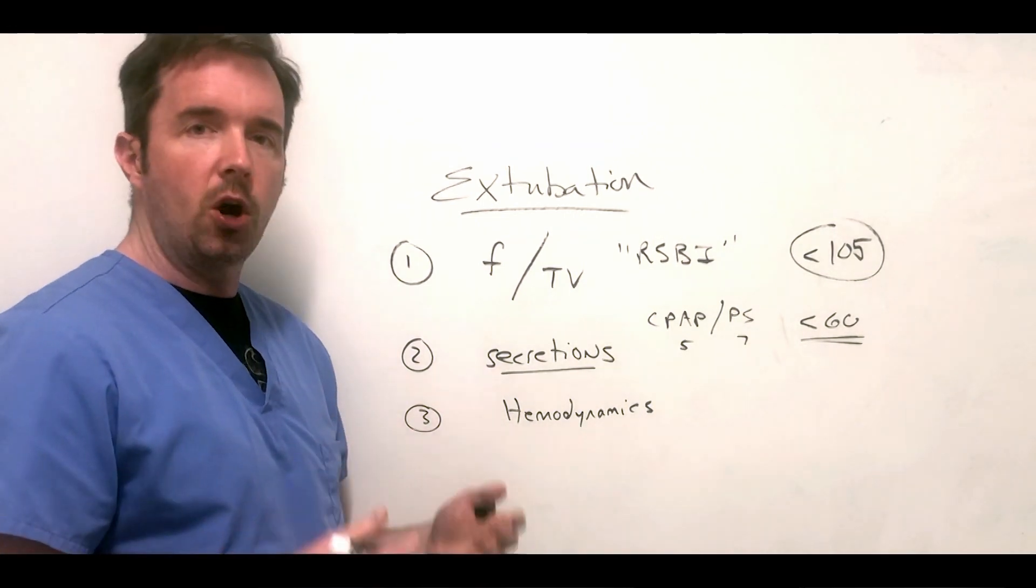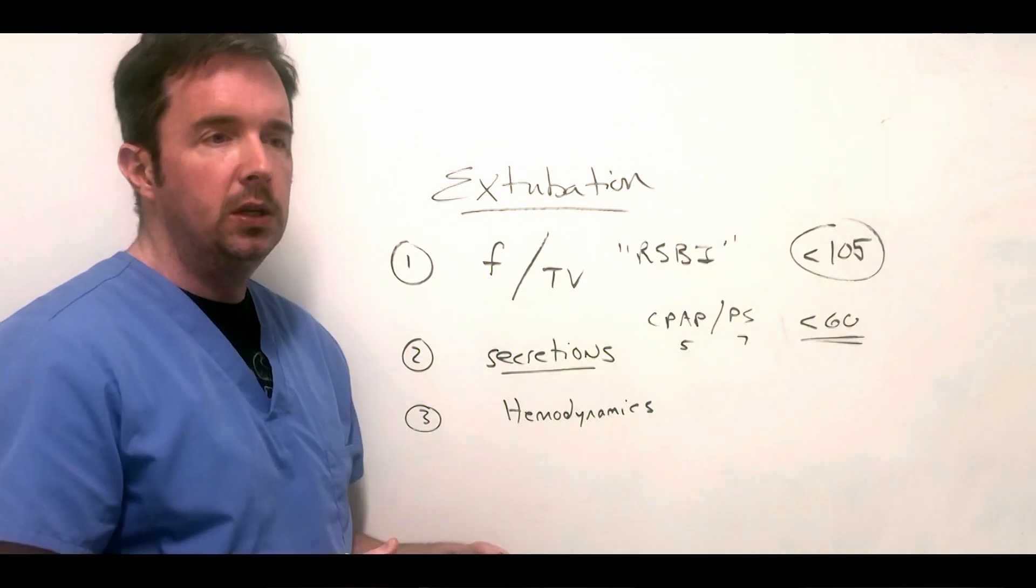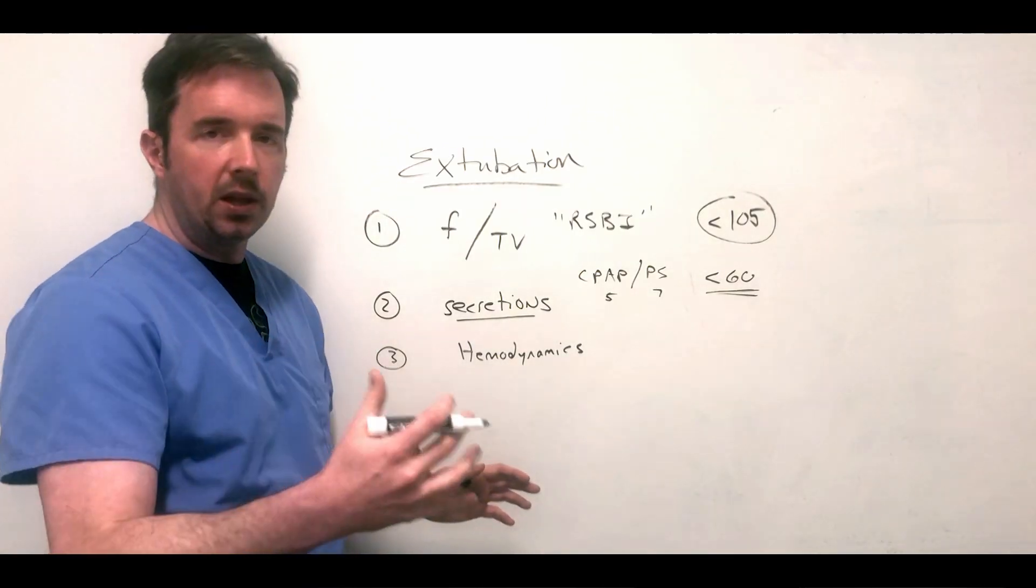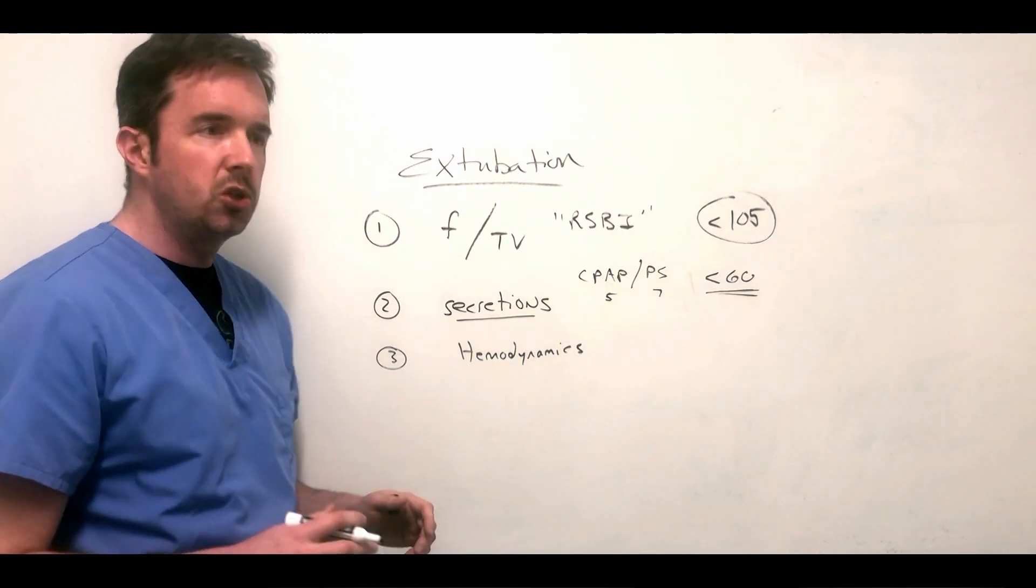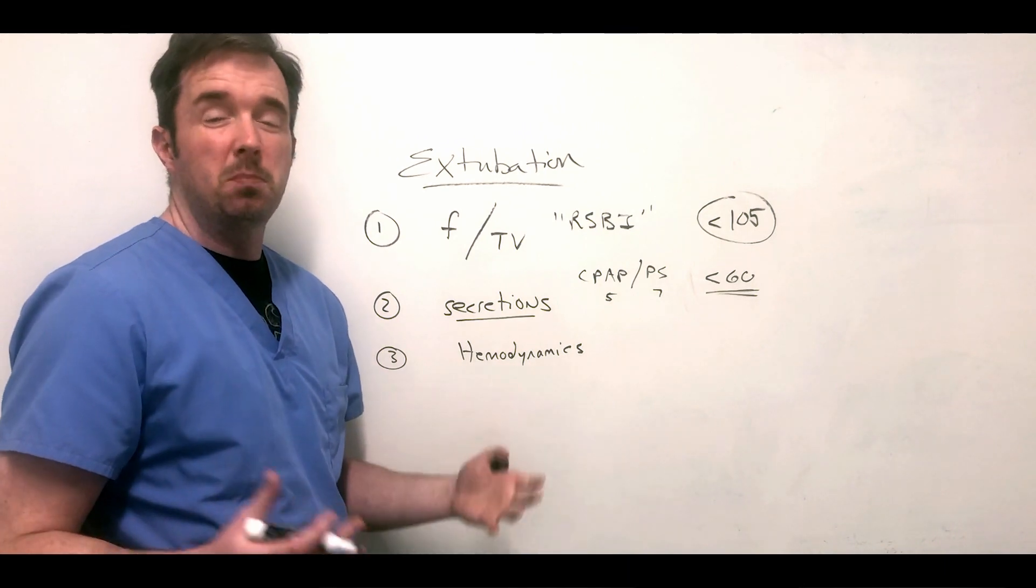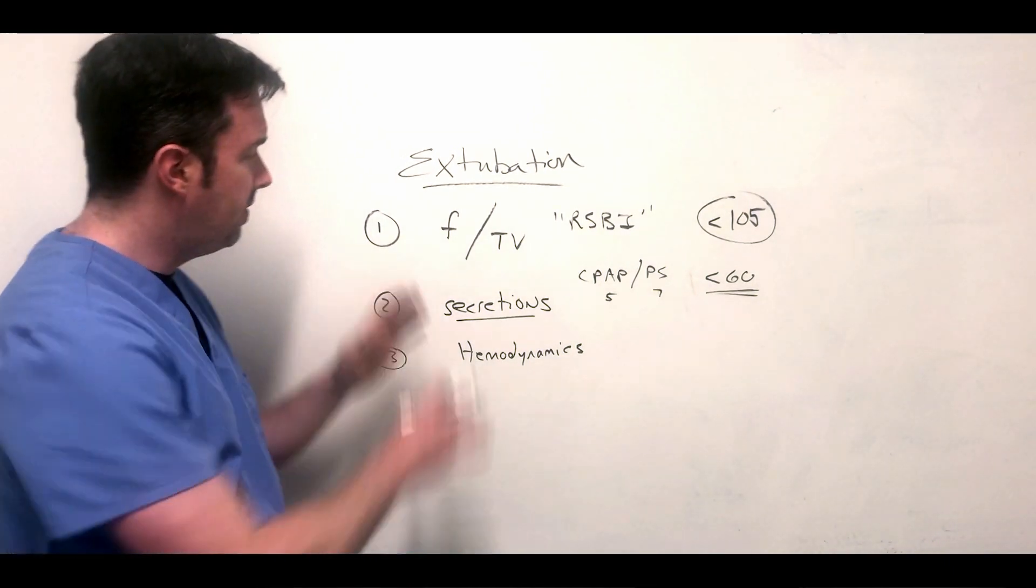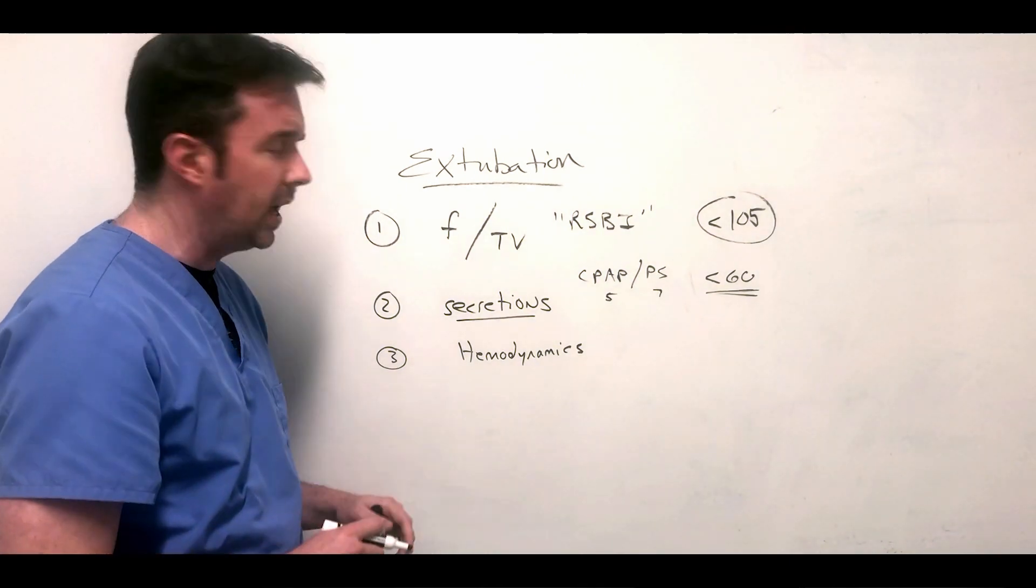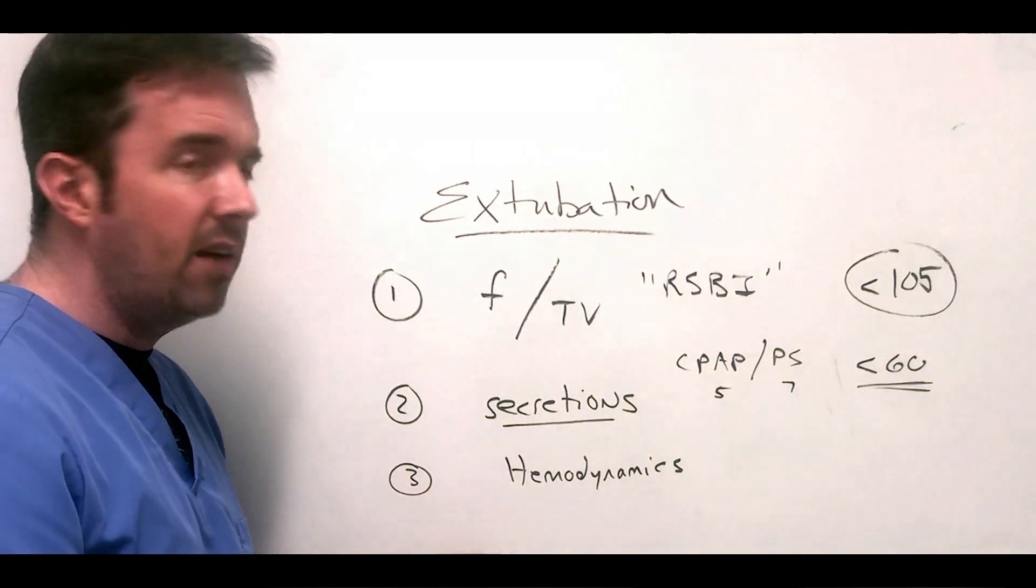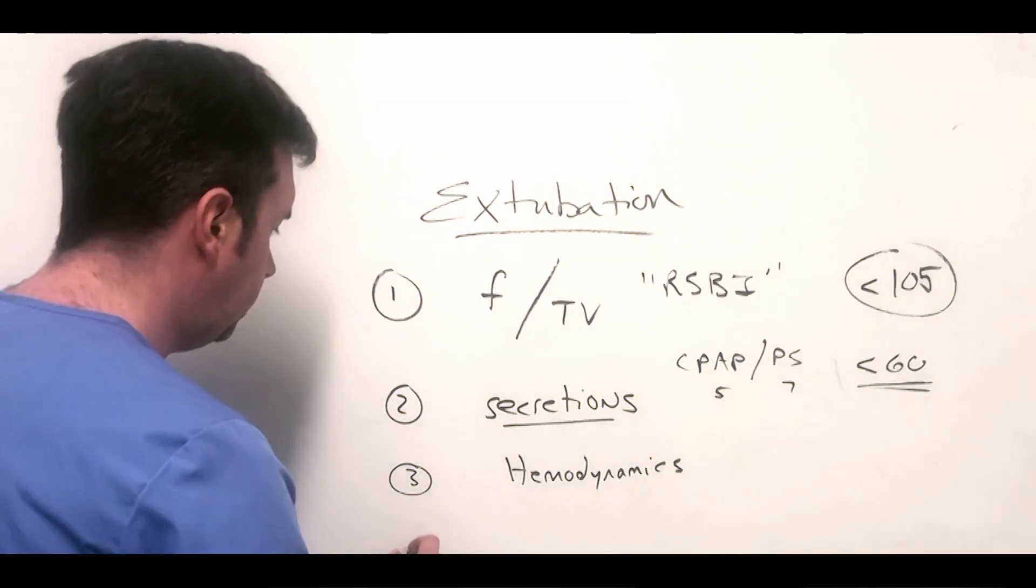So they may get more tachycardic, more anxious, and that may push them into tachydysrhythmias like afib. So I like to have atrial fibrillation well controlled, I like to make sure the patient is adequately diuresed, I like to see them off pressors as much as possible. Sometimes you have to extubate on low doses of vasopressors if everything else is lining up - that's probably okay. But if you're on higher doses of vasopressors, if you're having tachydysrhythmias, probably not the best time to extubate.